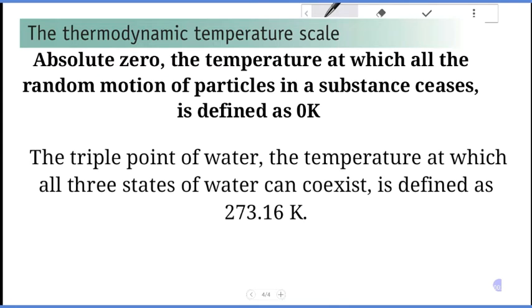Absolute zero is the temperature at which all random motion of a particle in a substance ceases, defined as zero Kelvin. The triple point of water is the temperature at which all three states of water can coexist, defined as 273.16 Kelvin.